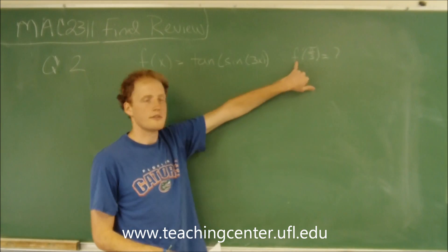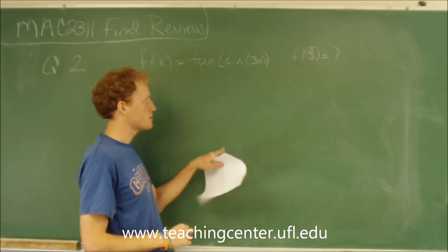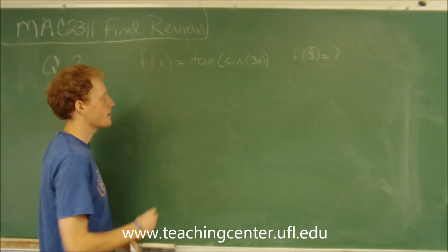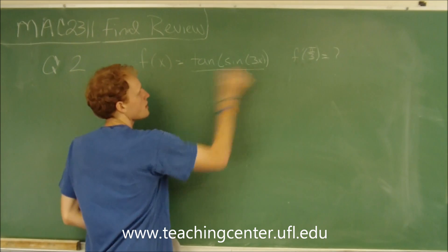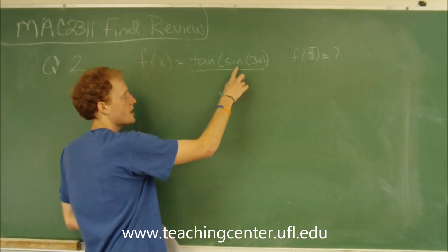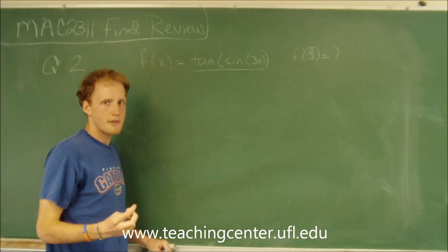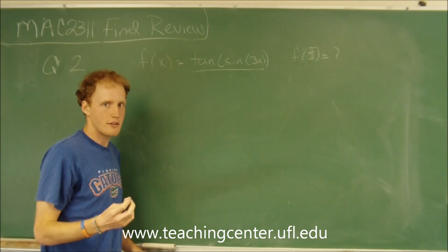So it's asking for the derivative at pi over 3, so let's take the derivative. It looks like we have a function inside of a function, so that means to take the derivative we have to do the chain rule.